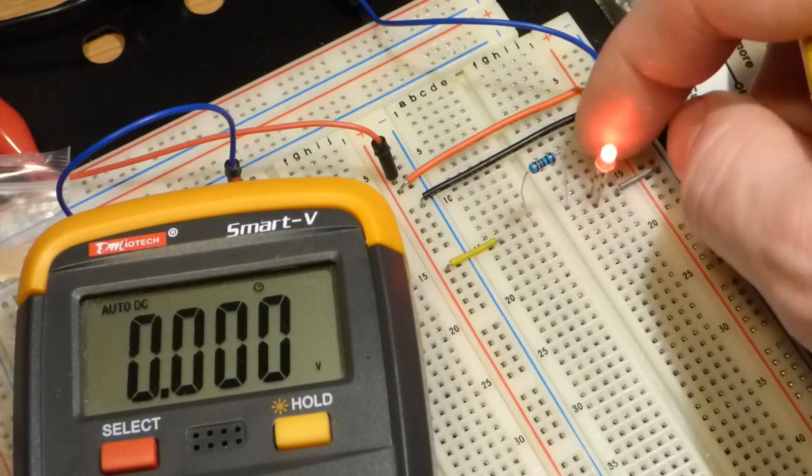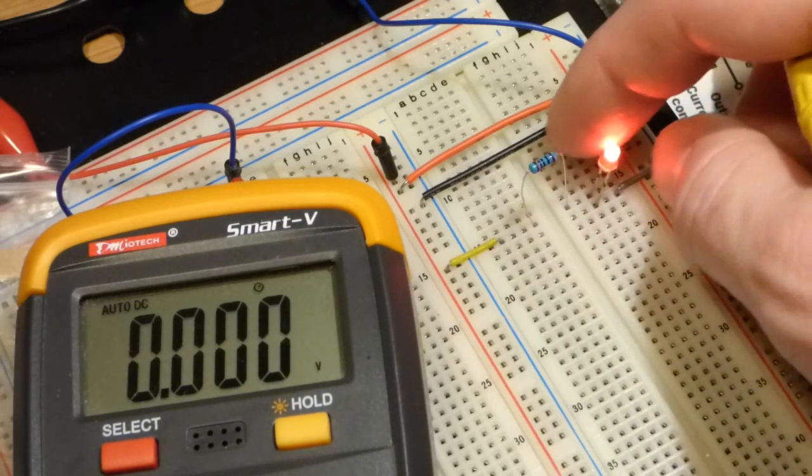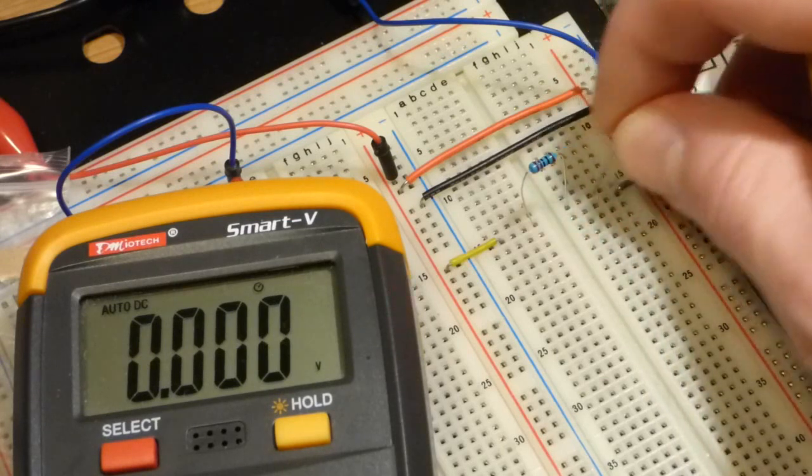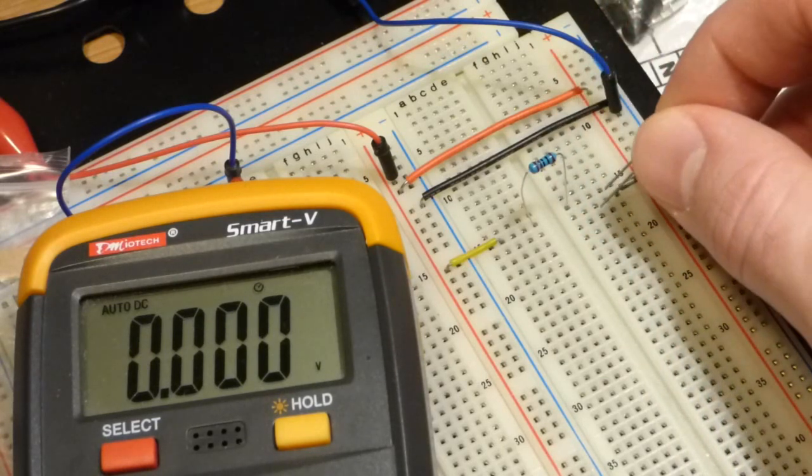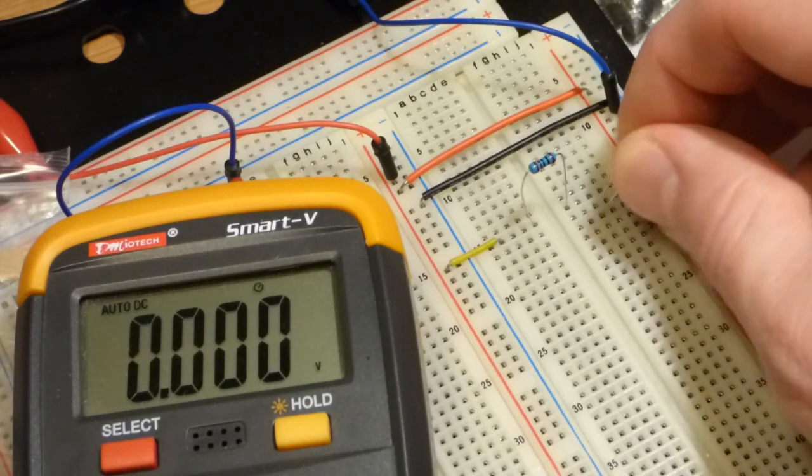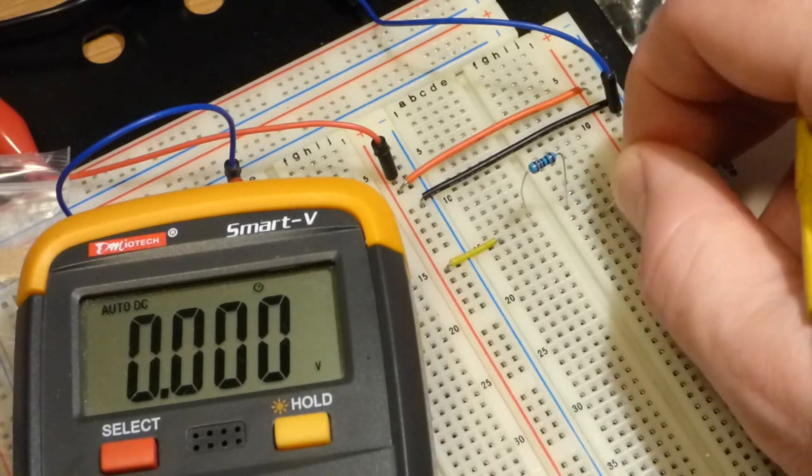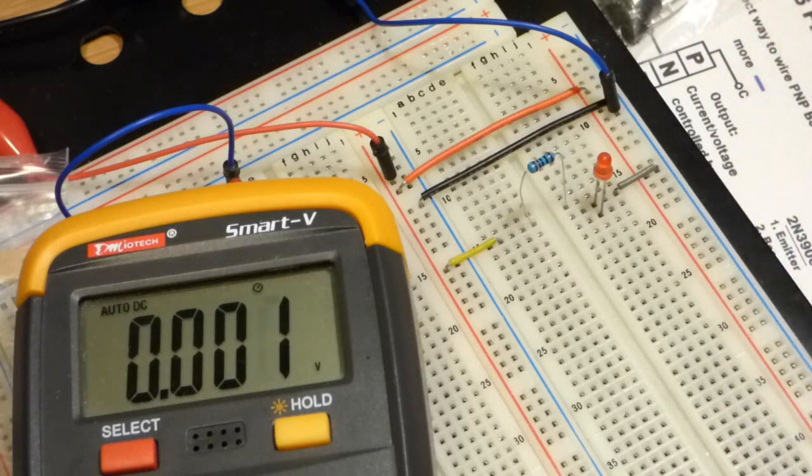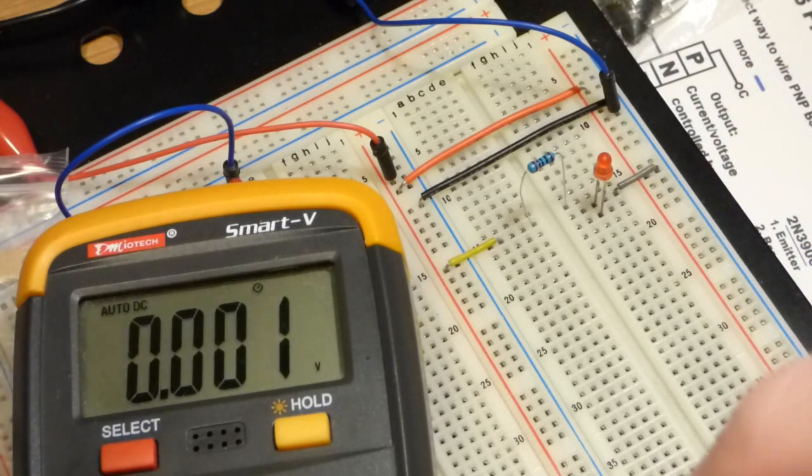So about 2 volts anyways. We measured the voltage across the resistor. What we're gonna do: the long lead, the anode of the LED, is connected directly to the resistor. We're going to flip it so the short lead is still at the negative rail, but the long lead is on its own row.